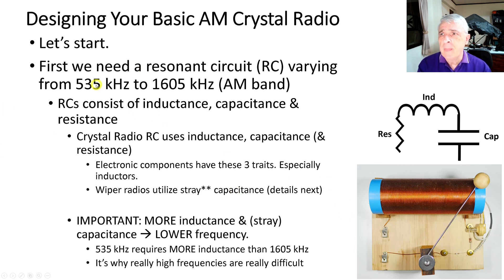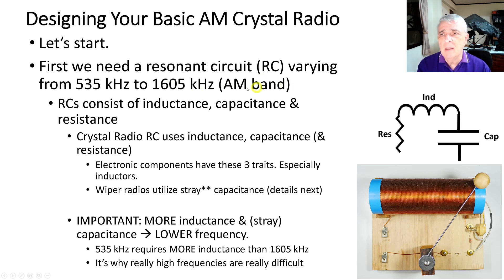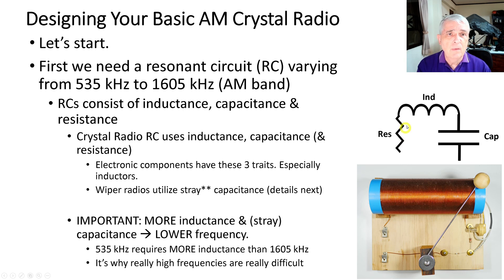Let's get started with the design. First we need a resonant circuit — I'll call that an LC — and it has to tune from 535 kHz to about 1605 kHz, which is the AM band in the US. A resonant circuit consists of inductance, capacitance, and resistance. In many designs the resistance won't be obvious; it's just part of the circuit, because for example a long piece of wire in an inductor has resistance.